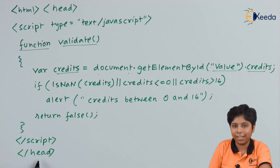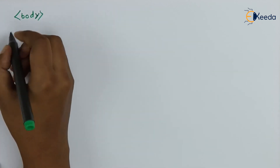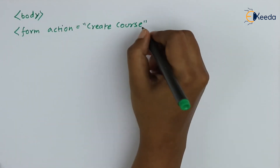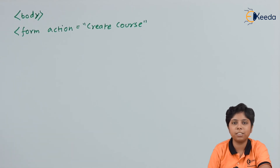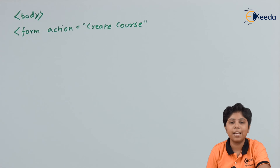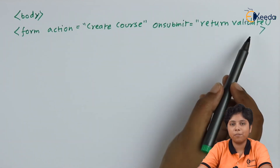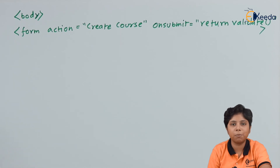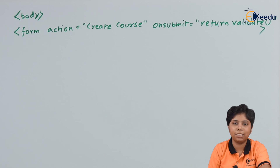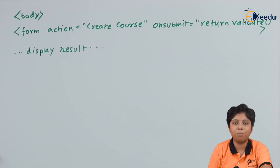After closing the script and head tags, the JavaScript has been added to our HTML. The HTML body part follows. I am creating a course form for a student, collecting the course and credits. The action is set to createCourse, and on submit we use the onSubmit attribute. The return value of the validate function is used with onSubmit: if it returns true, the credit lies between 0 and 16; otherwise it returns false. With normal HTML code, we display all results, then close the form, body, and HTML tags.